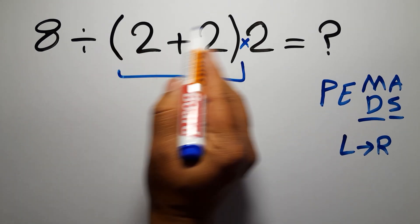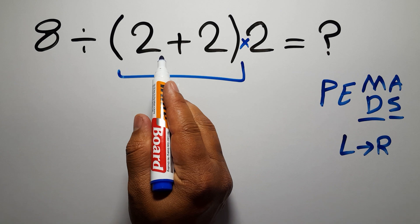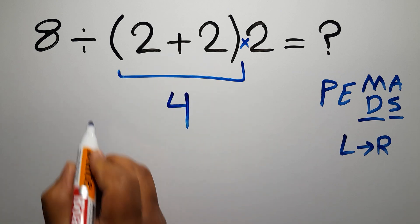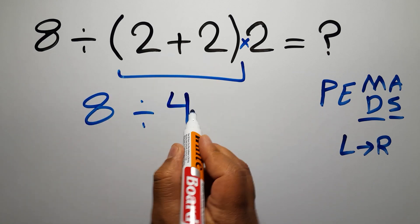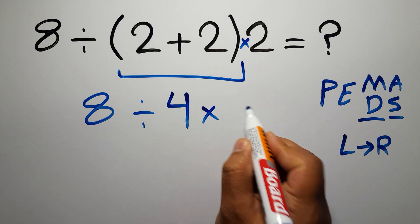So first these parentheses, inside these parentheses we have 2 plus 2, which equals 4. So 8 divided by 4, then times 2.